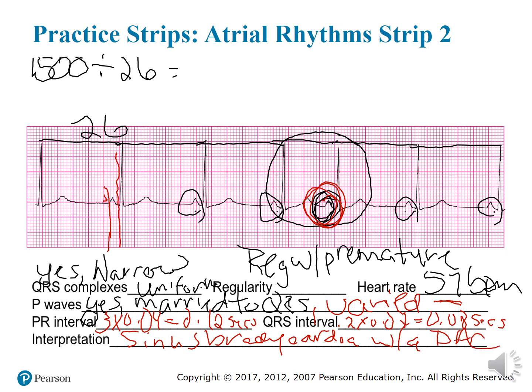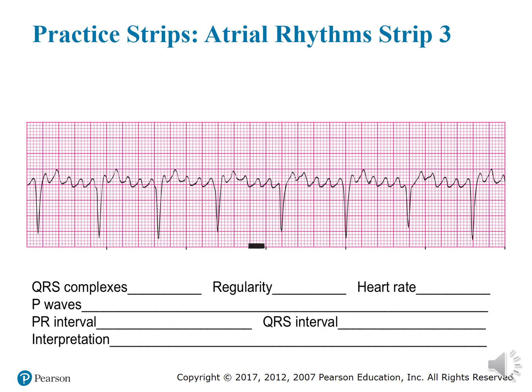That's the interpretation. Let's go ahead and do one more. Gotta ask those questions again. Are there any QRS complexes? Yes, we have QRS complexes. Are they uniformly shaped? Nope — they're narrow and varied.